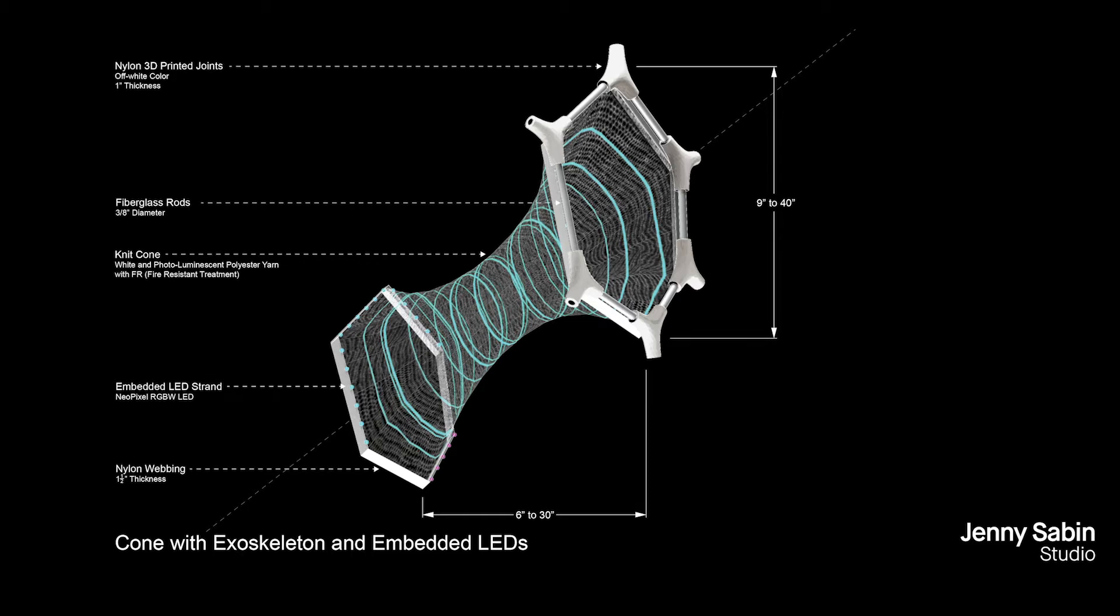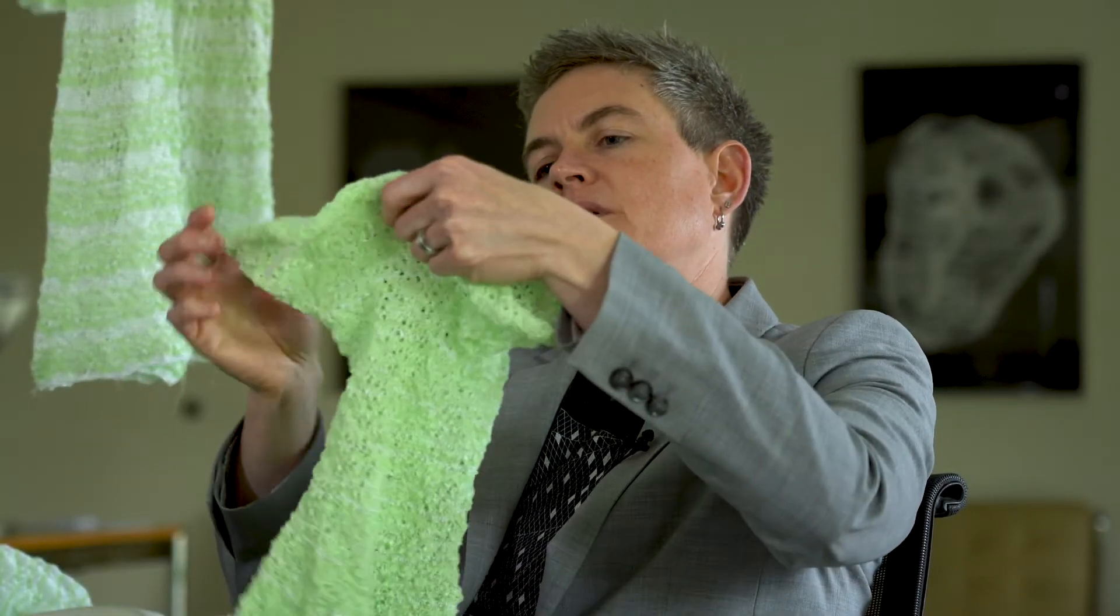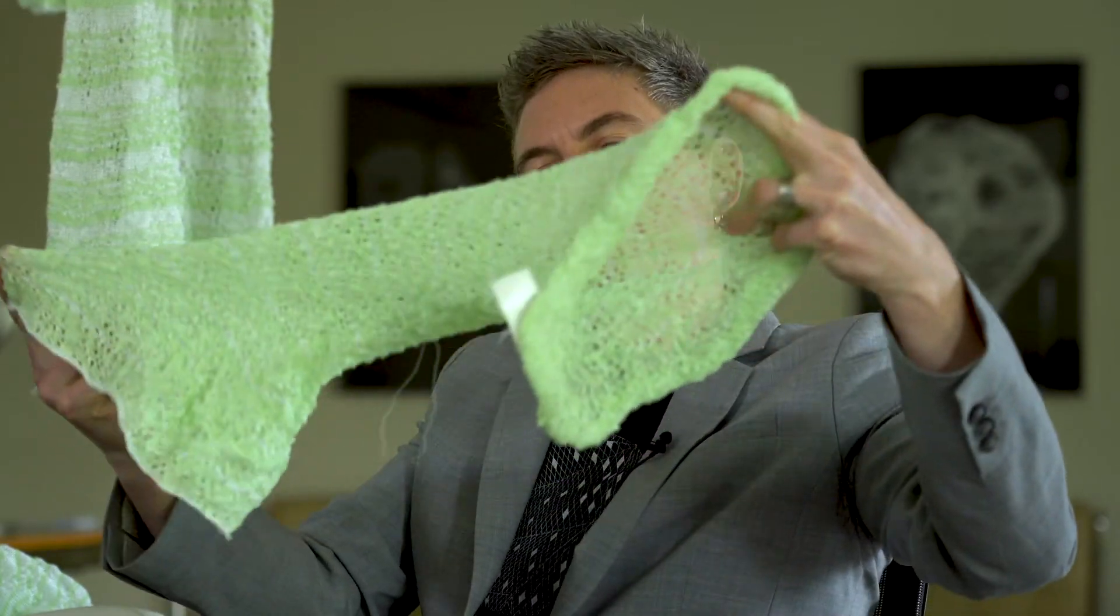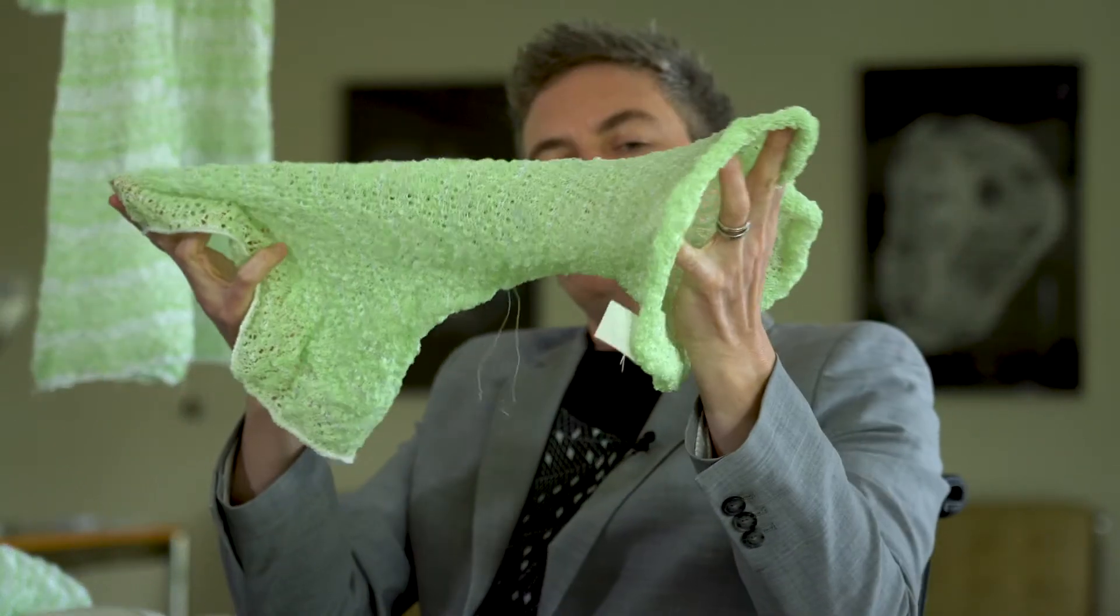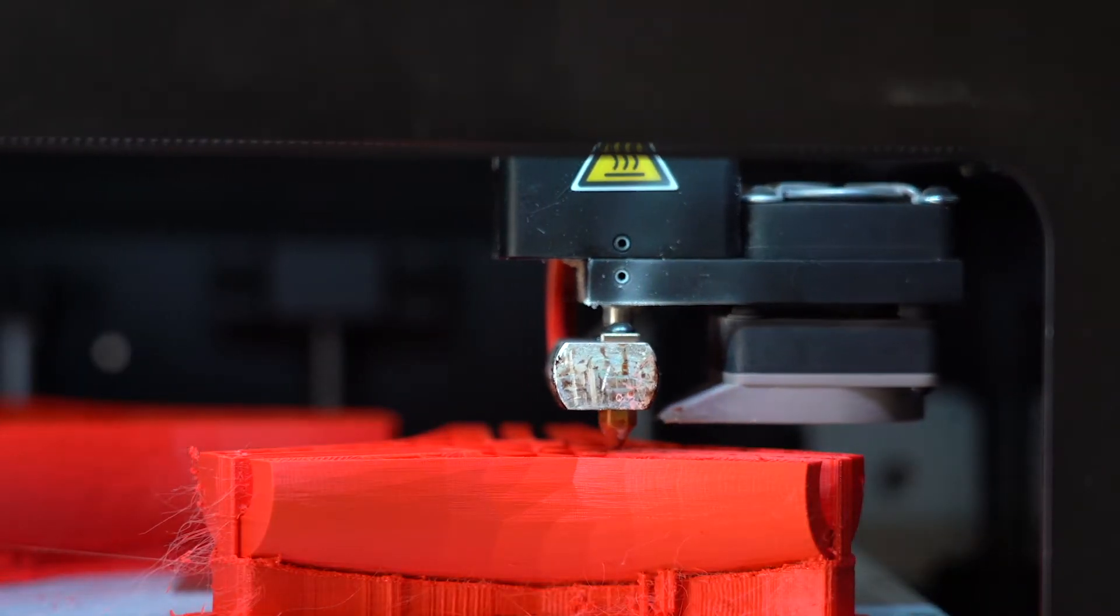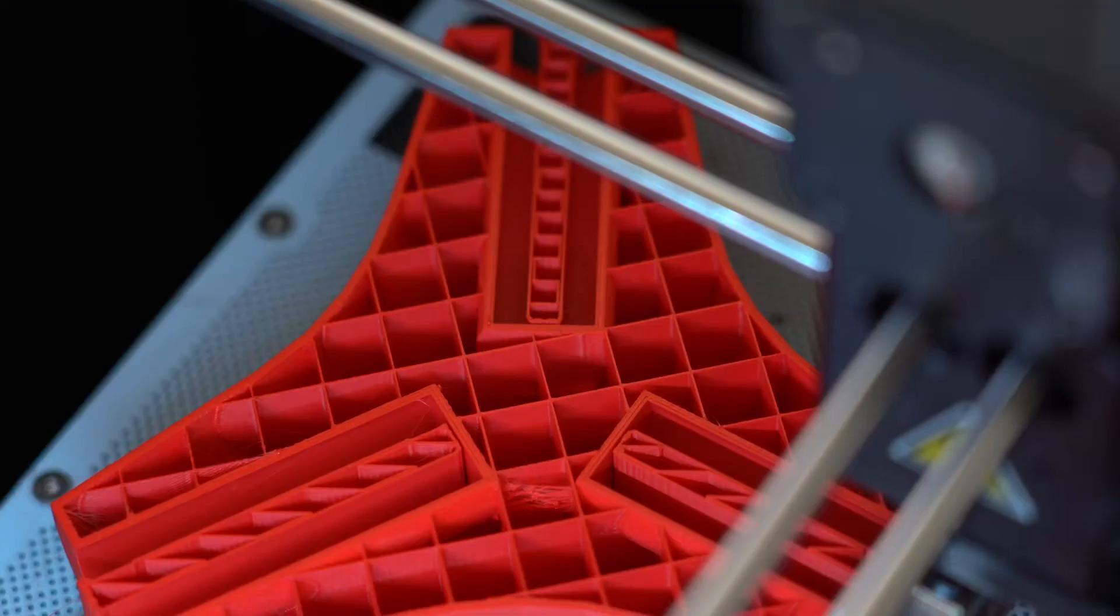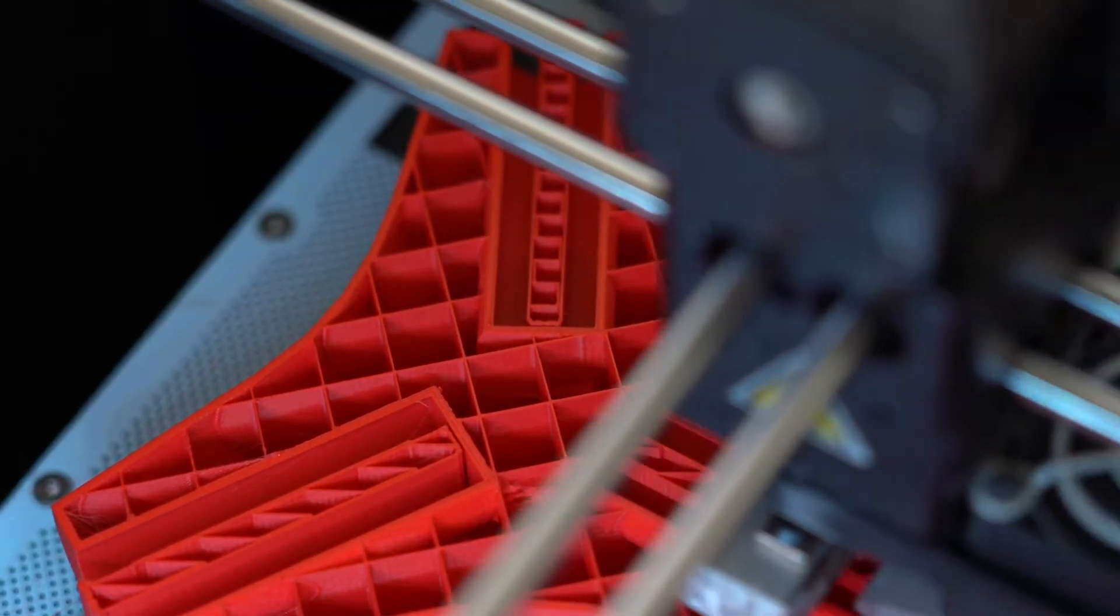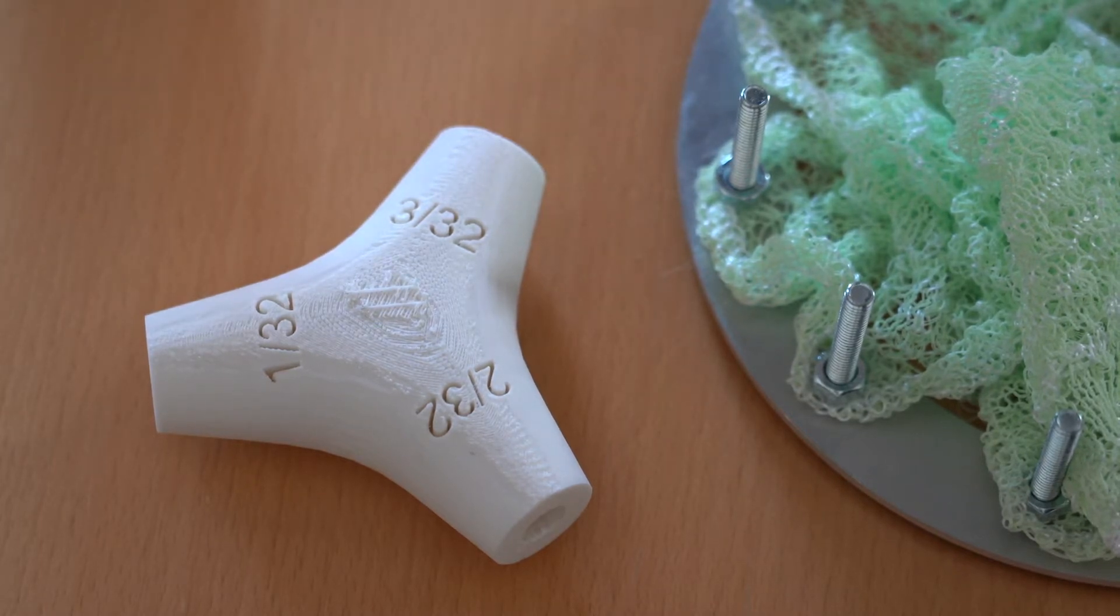Connecting those two surfaces will be these knitted cones, which when they're in full tension, will act like springs. And then running on the outside will be hundreds of these 3D printed nodes, each one having a fiberglass reinforced rod connecting to its neighbors.